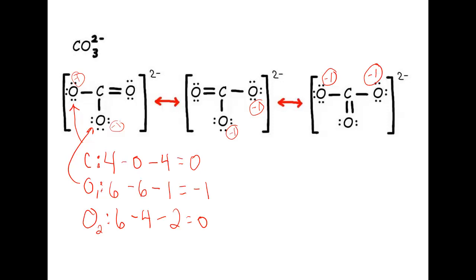Looking at all three structures, if one were going to contribute more to the overall resonance hybrid, it would have a minimized amount of formal charges. But all three structures just have two formal charges of negative one, so all three will contribute equally to the resonance hybrid. A good way to check your work is that all the formal charges within a structure should add up to the structure's overall charge. Here the two negative one formal charges add up to negative two, which is our overall charge — so that's correct. In a neutral compound, they would all add up to zero.